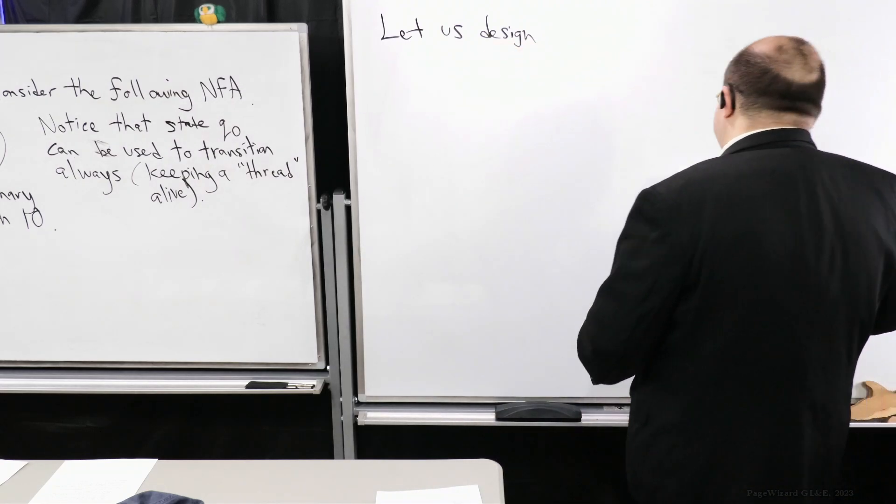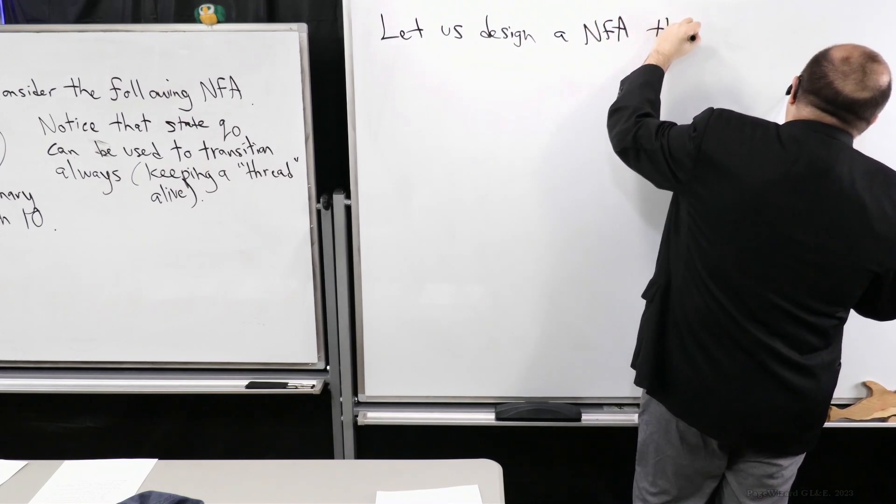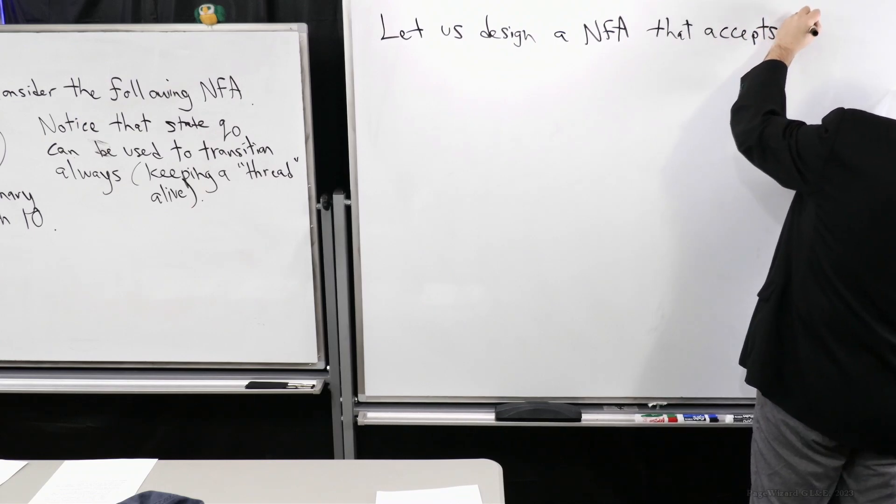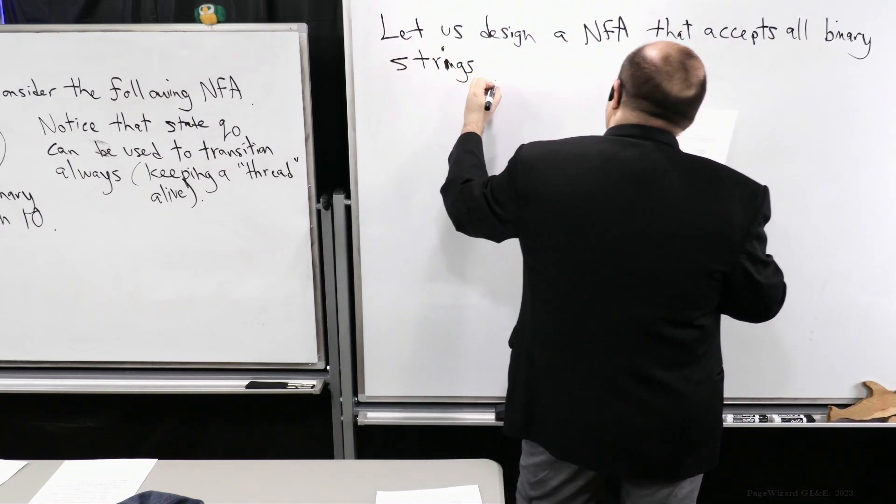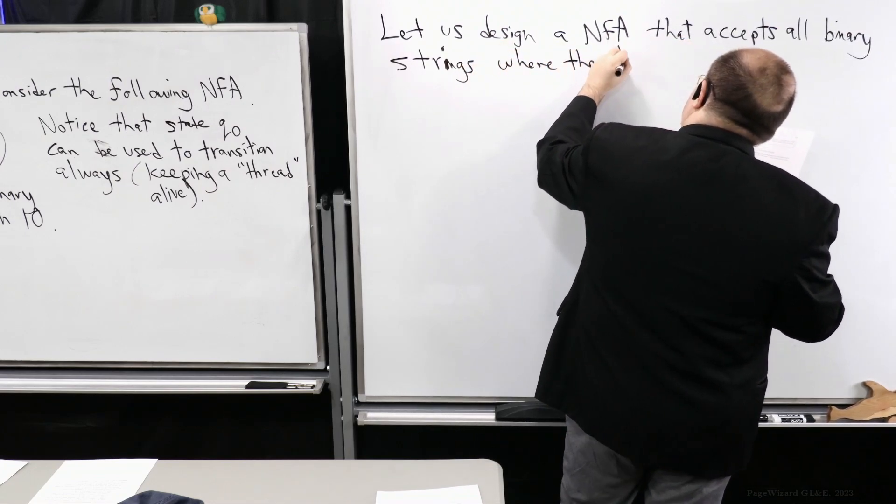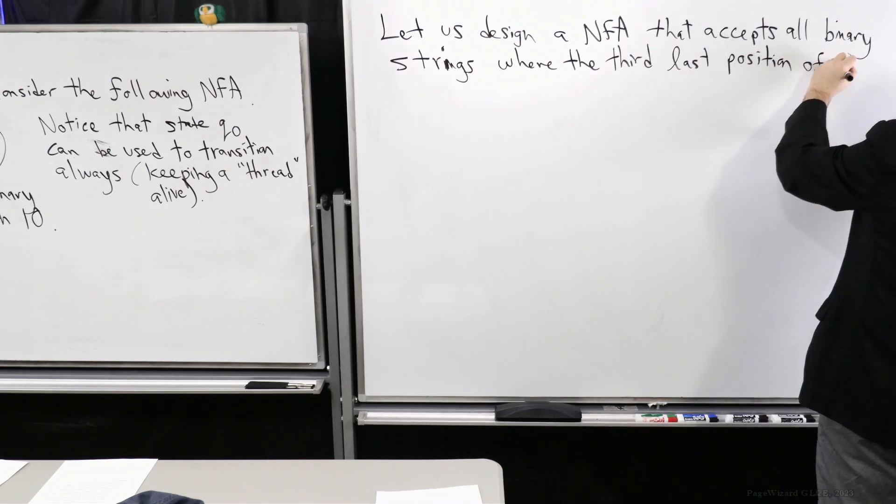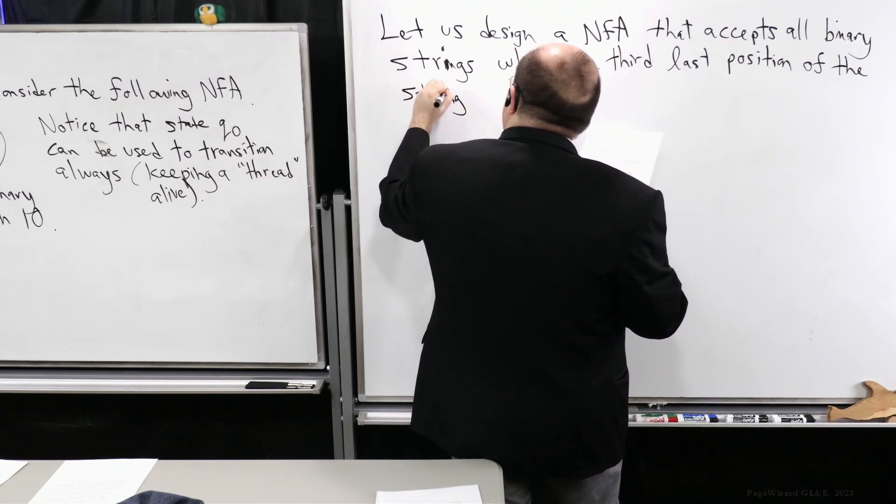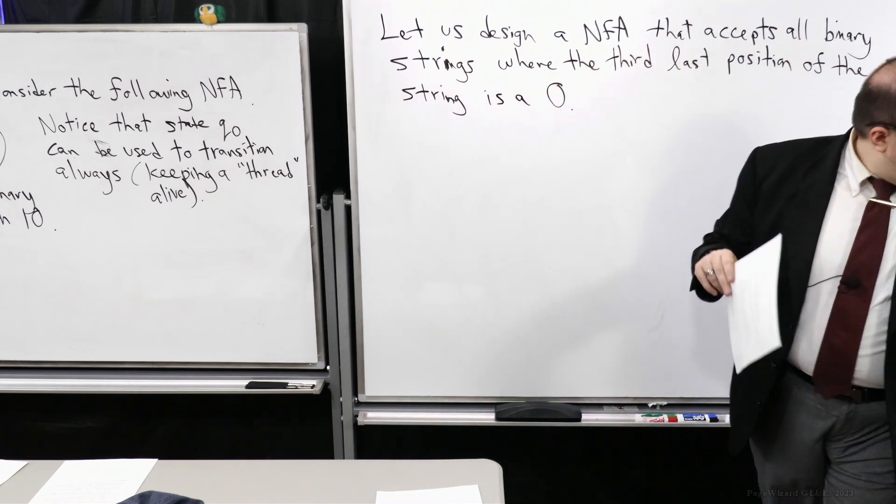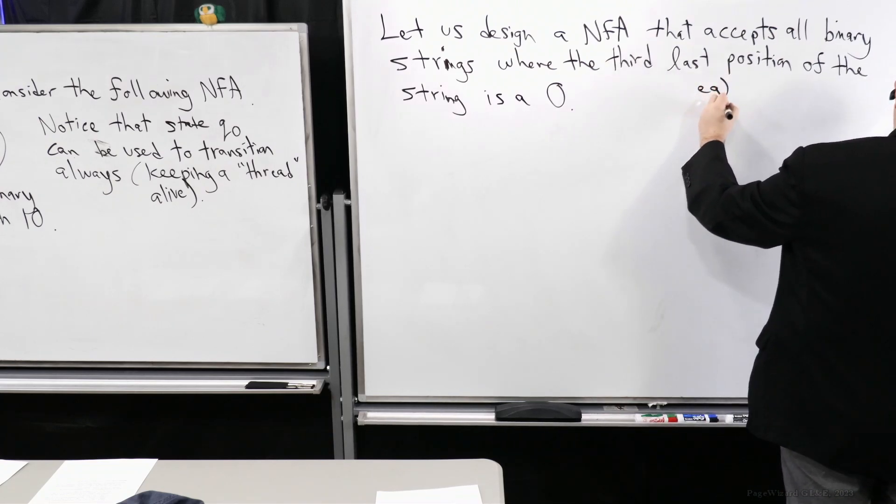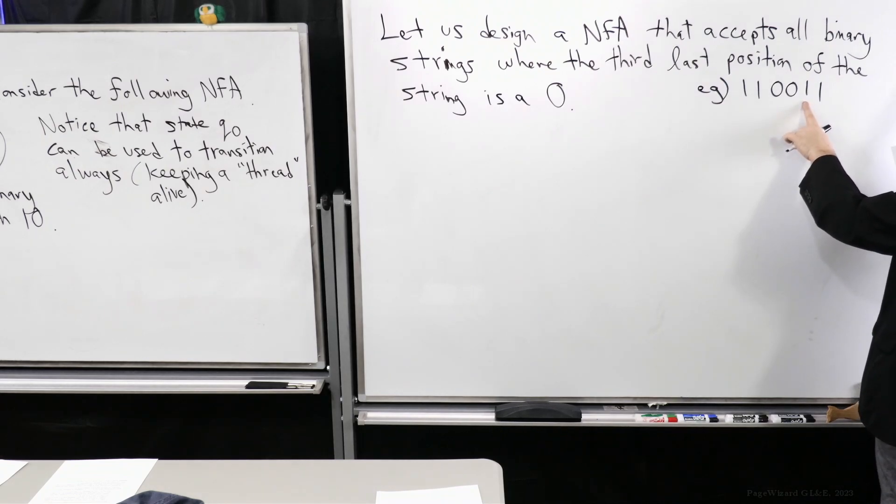Like I said, it allows us to have another go around. So let us design an NFA that accepts all binary strings, all binary strings, where the third last position of the string, of the string is a zero. So just to clarify what I mean by this, let's consider a couple of example strings. So just as a quick example. 1, 1, 0, 0, 1, 1. So this is the last position, this is the second last position, this is the third last position. There's a zero in here, so it should accept this string.